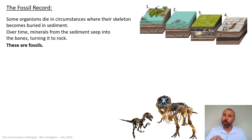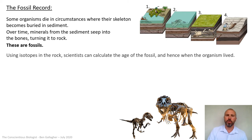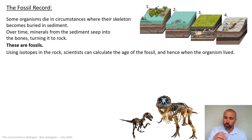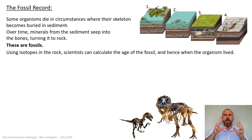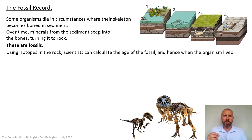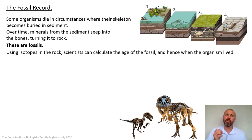Fossils are the ancient remains of creatures that have long since gone extinct. Using isotopes in the rock of the fossils, scientists can calculate the age of the fossil. Isotopes are atoms with different amounts of neutrons. You can look at the ratios between them and how quickly they degrade to age rock. All you need to understand for biology is that there are methods for dating how old rock is, which means you can know how long ago that organism lived.